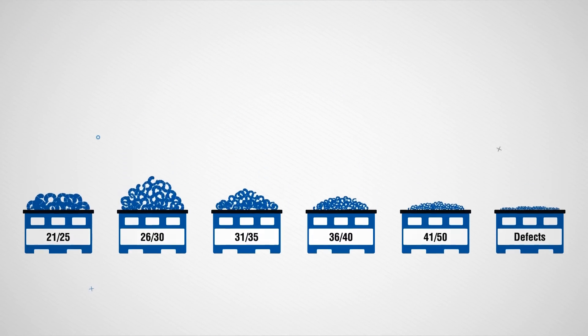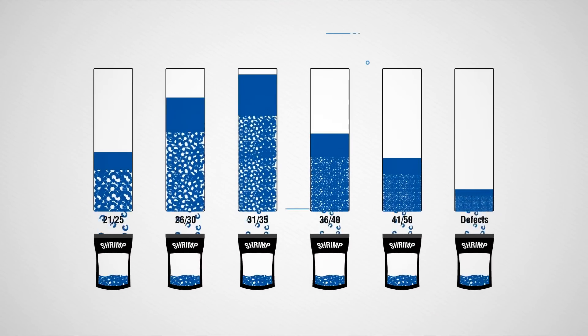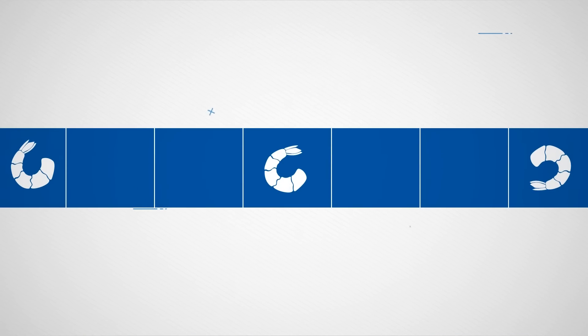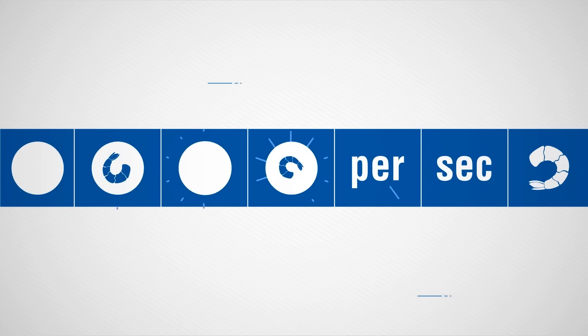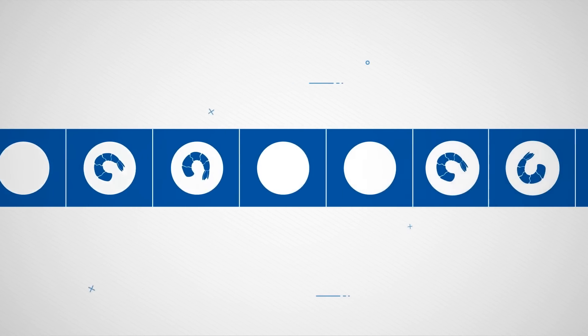The batch fed system sorts by size and inspects each shrimp for defects all at a rate of 45 shrimp per second and shows the operator in real time how a batch is grading out.